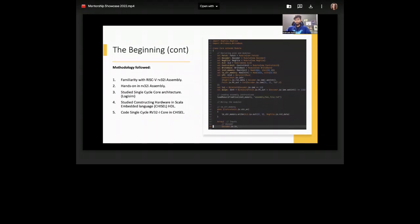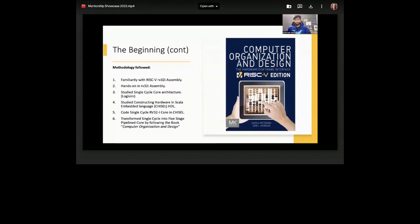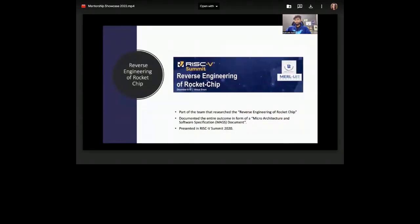Then we studied the single-cycle core architecture in Logisim, which is a circuit-developing software, and we created the entire architecture with our own hands. We studied the Chisel HDL and started off by creating some basic designs like adder, multiplier, and then incrementally moving forward by creating the components of the single-cycle core. After that, we transformed our single-cycle core into five-stage pipeline core by following the book Computer Organization and Design, especially for RISC-V by David Patterson.